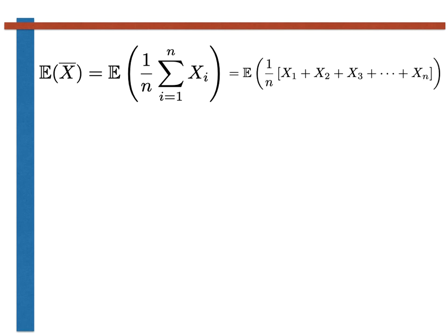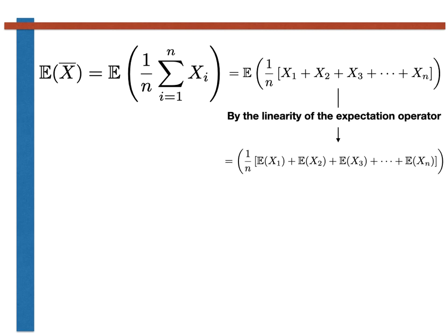To do so, we must take the expectation of the sum shown here, which we can expand out without the summation sign as shown here. We now recall that the expectation is a linear operator. This idea was covered in the video that you watched at the start of the week. As expectation is a linear operator, we can rewrite the expectation of the sum as a sum of expectations, as shown here.